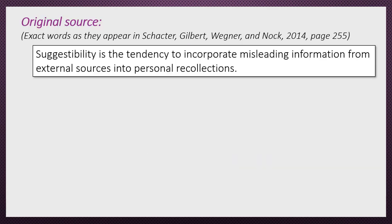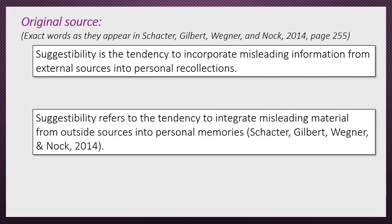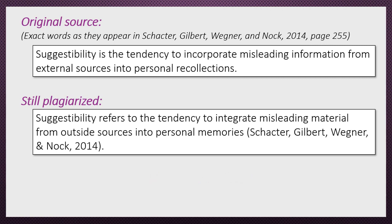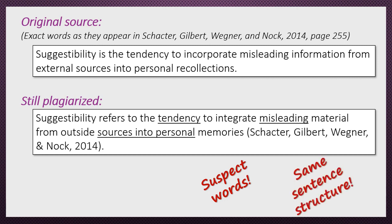Let's take a look at an example. Here again we have our original source: "Suggestibility is the tendency to incorporate misleading information from external sources into personal recollections." Suppose this is what you write in your paper: "Suggestibility refers to the tendency to integrate misleading material from outside sources into personal memories" (Schachter, Gilbert, Wagner, and Nock). Is this plagiarism? Indeed, this is still plagiarized. The underlined words are suspect, and your sentence is structured the same way as the original source. This is clearly a case where you took the original sentence and just changed a few words.